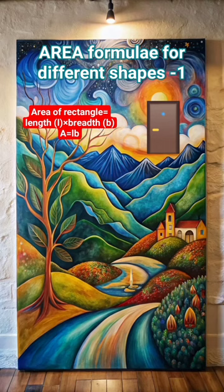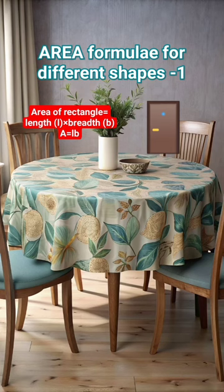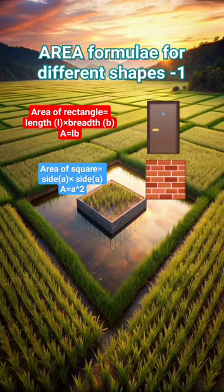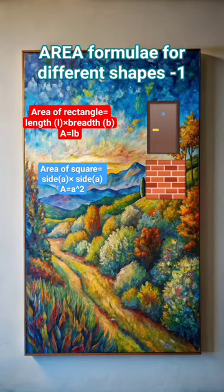Rectangle. Rectangle has four sides. Opposite sides are equal in the rectangle. The side which is long is taken as length. The side which is short is taken as breadth. Area of rectangle equal to length into breadth.